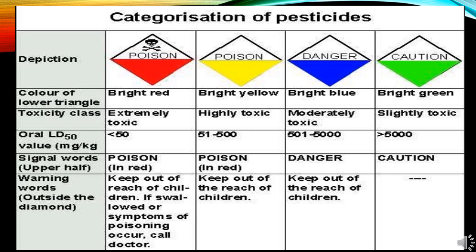Here we will study about the categorization of pesticides. Pesticides have been categorized into four groups: first, extremely toxic; second, highly toxic; third, moderately toxic; and fourth, slightly toxic. For the first — extremely toxic — the color of the lower triangle is bright red, the toxicity class is extremely toxic, and the overall LD level is less than 50. The signal word is 'Poison' in red, and the warning outside the diamond reads: keep out of reach of children; if swallowed or symptoms of poisoning occur, call a doctor.